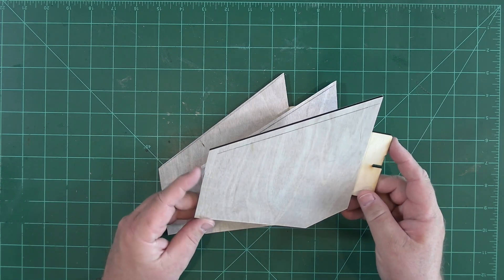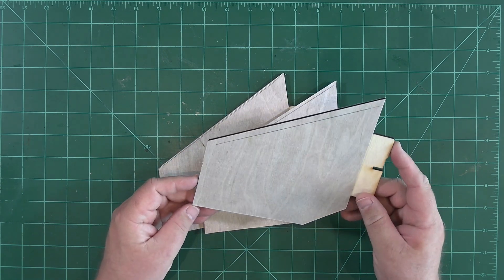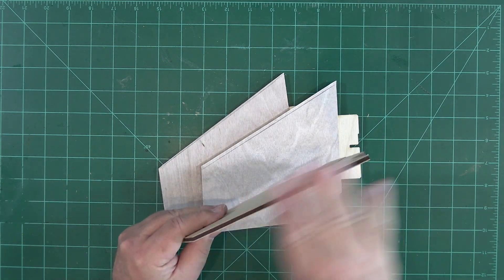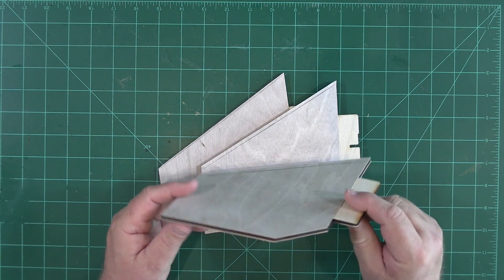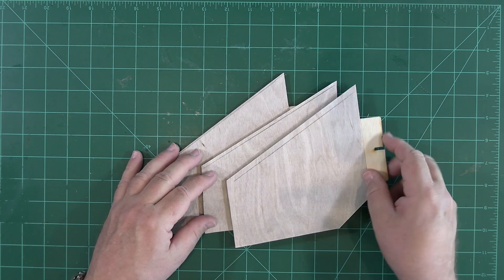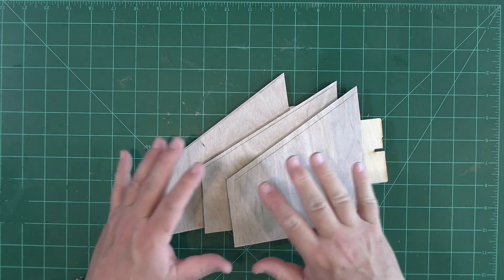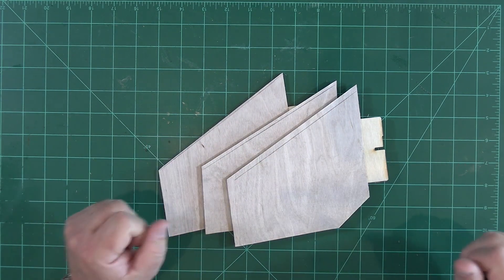And there we have a set of fins for an upscale Estes Centuri Patriot. A little bit of sanding work, it's impossible to completely avoid sanding with a sanding block on the edges, and we will be ready to fill and prime and paint these and assemble the model.